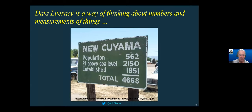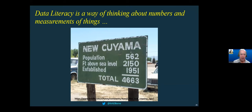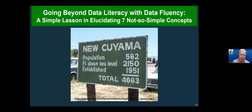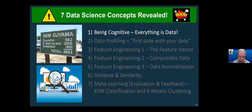This sign is for a small town in South America, and I believe it was intended to be a joke. It shows population, feet above sea level, and the year the town was established — and then somebody added those three numbers together. That's the joke: it doesn't make any sense to add those three numbers because they're three completely different things. It's like saying I have five children and I bought five gallons of milk, so I have 10 things. But on the other hand, I use this as a data literacy example — there are actually at least seven not-so-simple concepts in data fluency just from this single little sign.